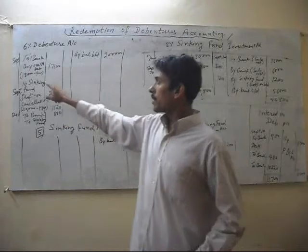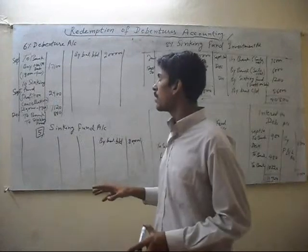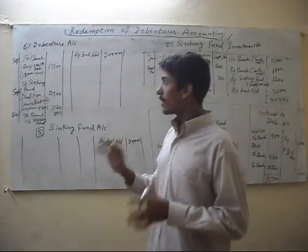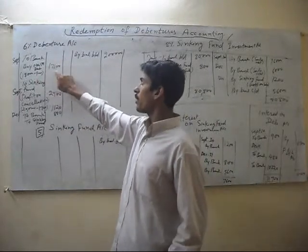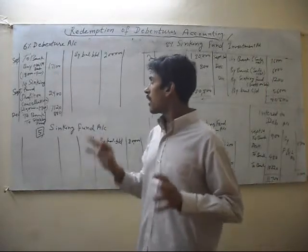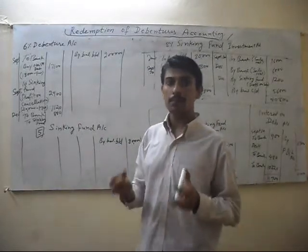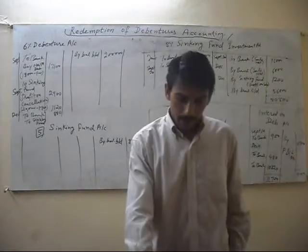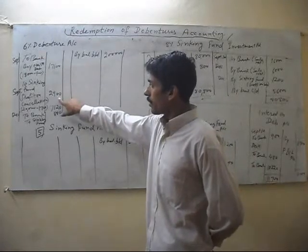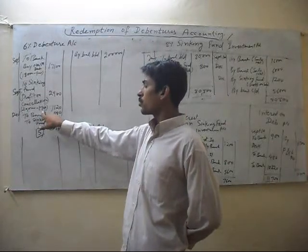For this, we buy a nominal value of 18,000 debentures. But this amount includes interest, so we deduct this amount and the net amount of sale proceeds we write here is 17,100. From this, we will earn a profit, and this profit is 2,900 — that is 20,000 minus 17,100 equals 2,900.